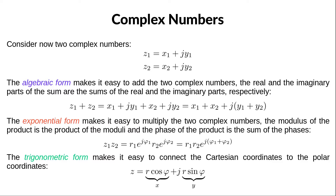Now consider two complex numbers z1 and z2. For addition or subtraction, the algebraic form is a good choice because the real part of the sum equals the sum of the real parts, and the same holds for the imaginary part. For multiplication, the exponential form is simplest: we multiply the moduli and add the phases. For division, we take the quotient of the moduli and the difference of the phases. For square roots, we take the square root of the modulus and divide the phase by 2.